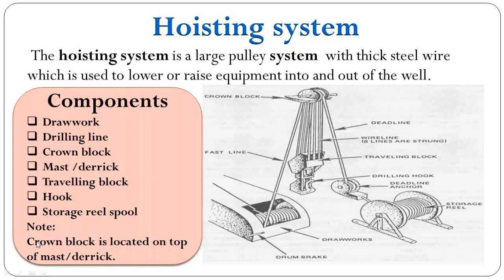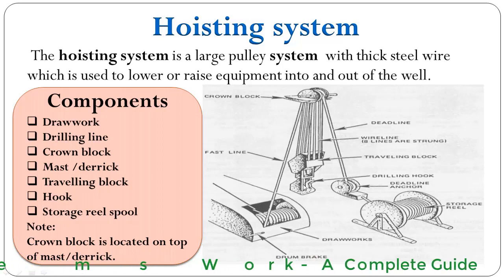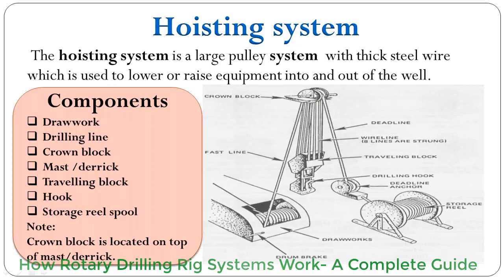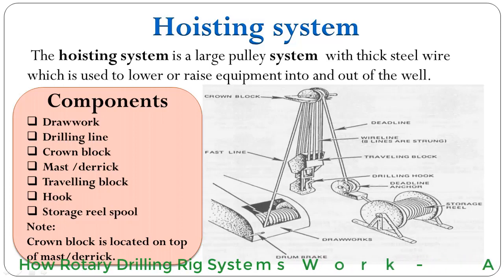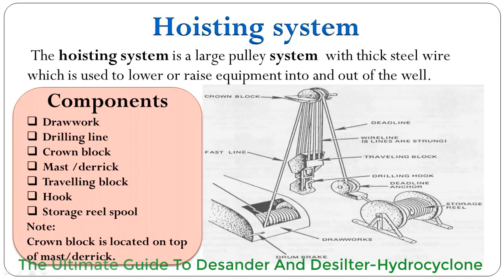The crown block is located on the top of the mast or derrick. In the hoisting system diagram, we can identify the draw works, drilling line, traveling block, hook below the traveling block, and the crown block, which has a number of sheaves on it — as does the traveling block. There is also a deadline anchor and a drilling line storage spool, which stores extra drilling line.